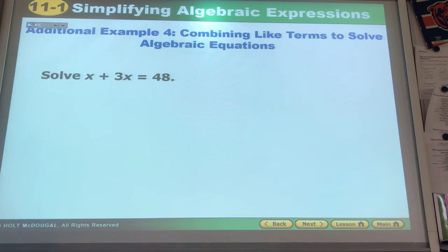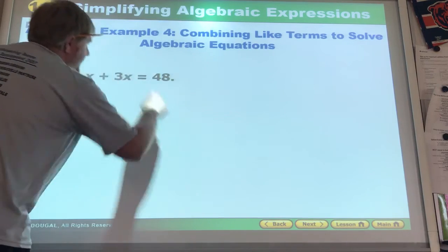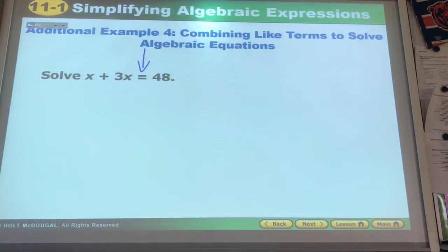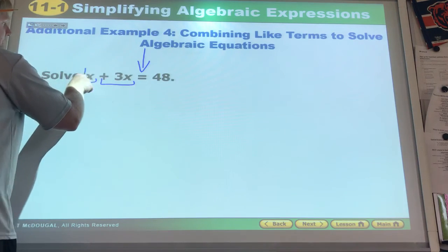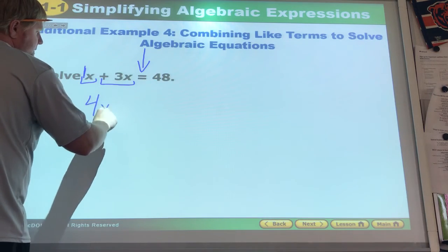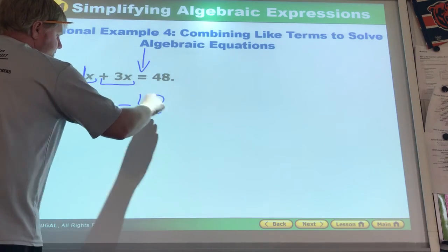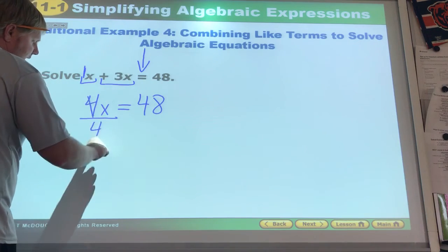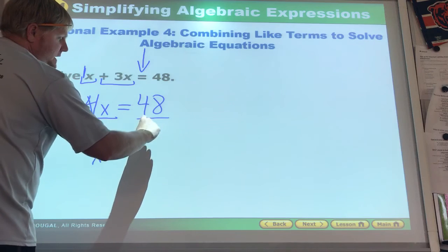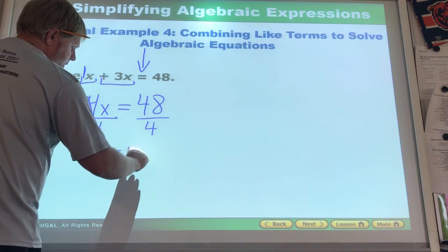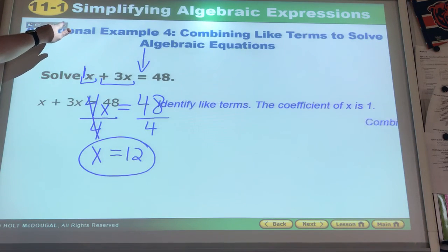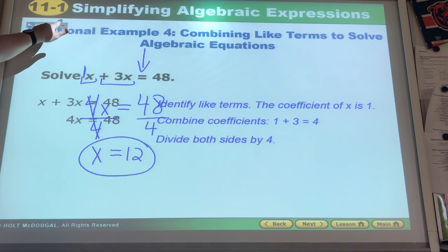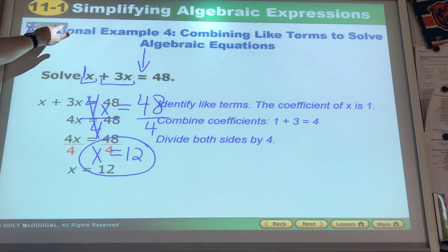X plus 3x equals 48. Notice we have an equal mark now. When we have an equal mark we can solve, and that's our overall goal. You'll add like terms first. Remember there's an understood one there. So 4x equals 48. Divide by 4 to get that x by itself. Do it on one side, you must do it on the other side. X equals 12. We watch them step through it. 4x equals 48, they divide both sides by 4, and they get x equals 12.